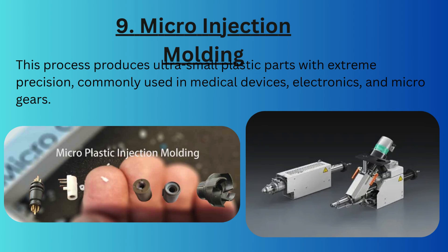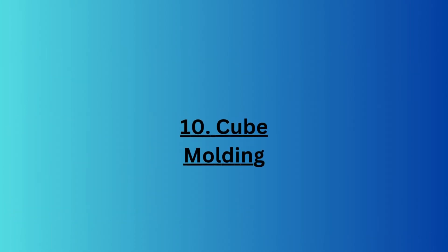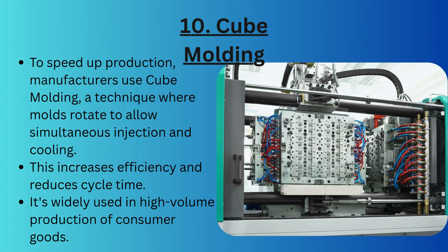If you need very small or tiny integrated components, micro injection molding is the solution. This process produces ultra-small plastic parts with extreme precision and is commonly used in medical devices, electronics, and micro gears.